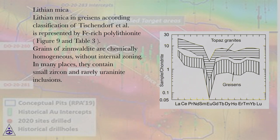Grains of zinwaldite are chemically homogeneous, without internal zoning. In many places, they contain small zircon and rarely uraninite inclusions.